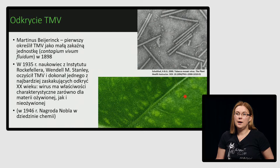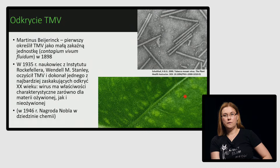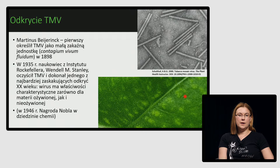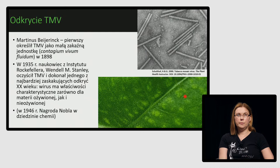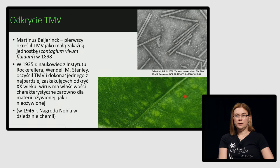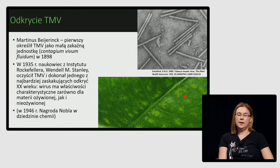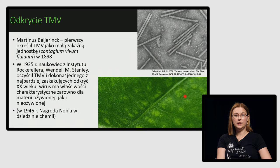Martinus Beijerinck zauważył, że przesącz z rośliny, który nie zawiera bakterii, nadal posiada właściwości zakaźne i nazwał go żywym zakaźnym płynem. Dalsze badania, w tym Wendela Stanleya, wykazały, że jest to wirus mozaiki tytoniu. Stanley zauważył cechę wspólną zarówno dla materii ożywionej, gdy wirus znajduje się w roślinie, jak i materii nieożywionej – gdy jest poza organizmem. Za to odkrycie dostał Nagrodę Nobla w dziedzinie chemii.